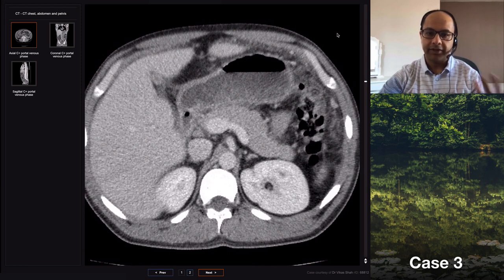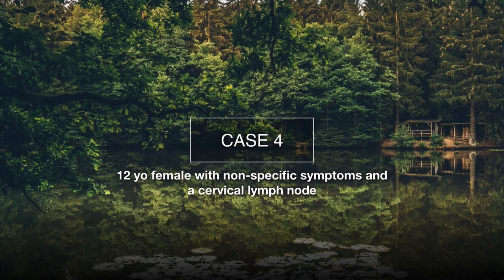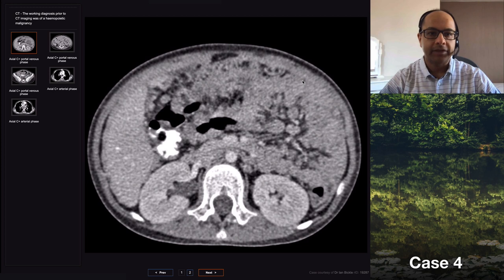Case number four is a quick one with just a few still images. This is a 12-year-old girl who had non-specific symptoms and a palpable cervical lymph node. The working diagnosis was a hematological malignancy, which is why the CT was done. Several axial slices of the abdomen and chest have been provided with both oral and IV contrast.